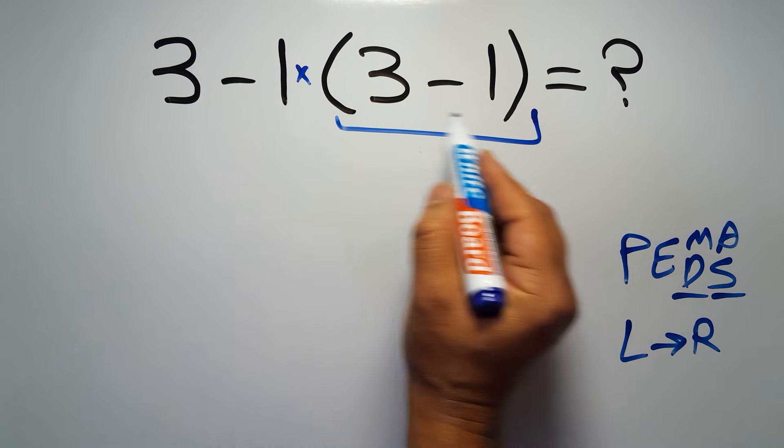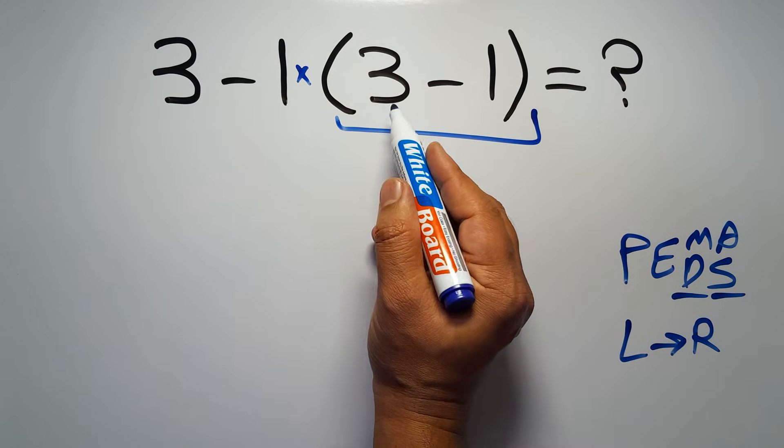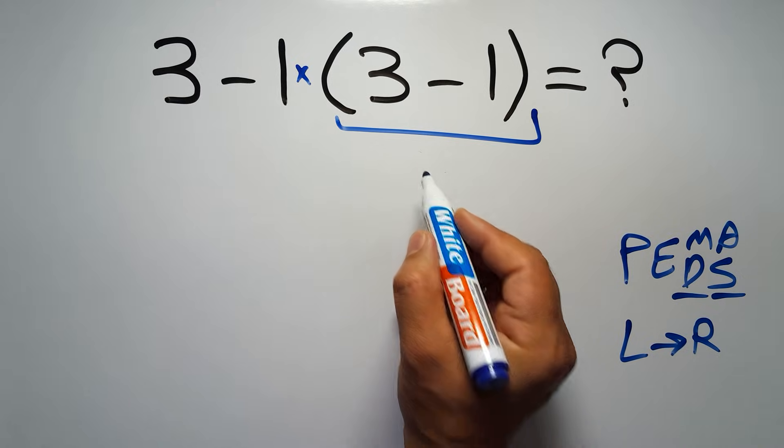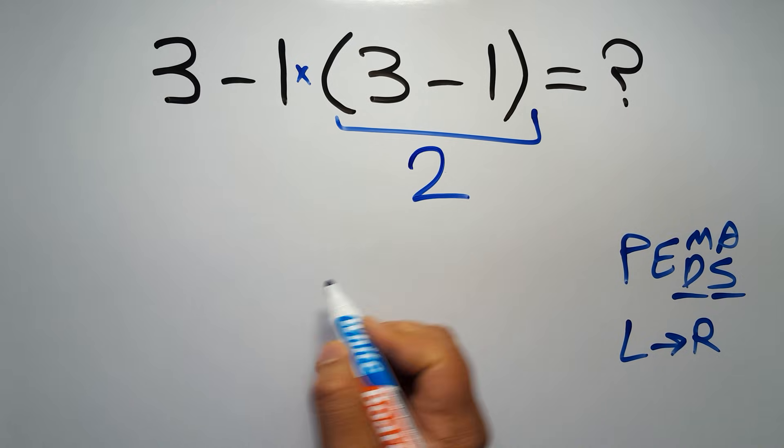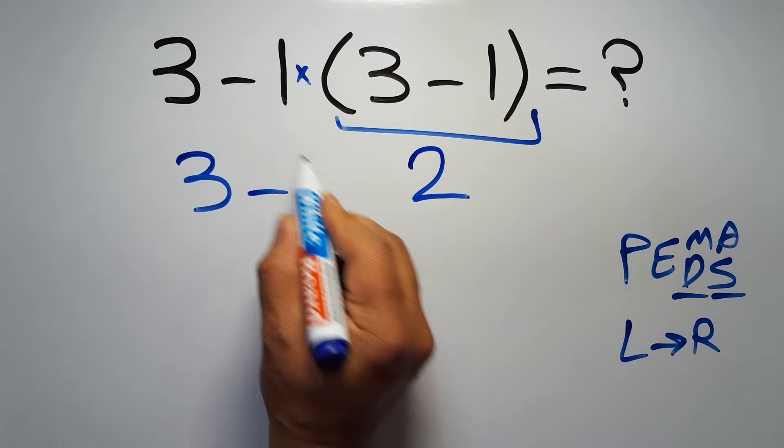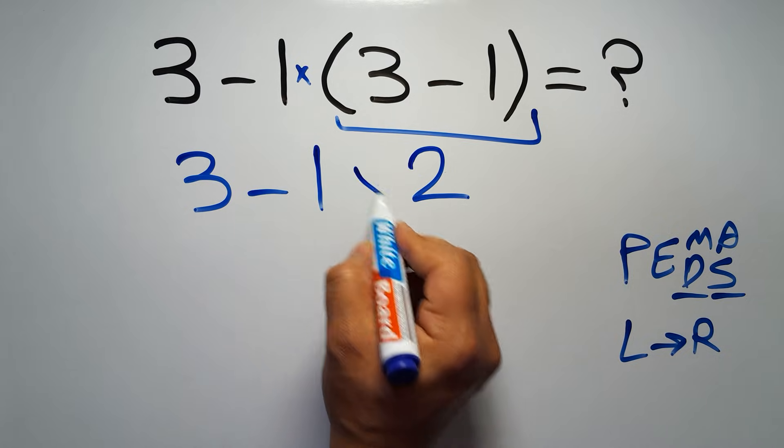So first this parentheses. Inside this parentheses we have 3 minus 1 which gives us 2. So 3 minus 1 times 2.